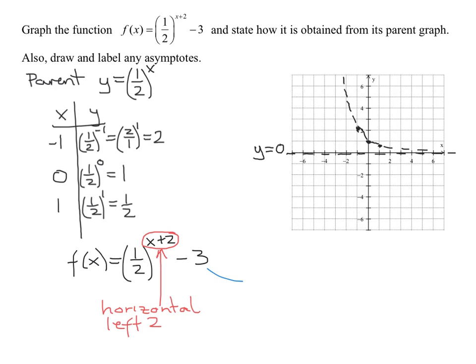And then we've got the minus 3. This is outside the function, after the function. So this is going to be a vertical effect, and it is going to shift down 3 units. And if you remember your order of operations, we always do horizontal shifts first and we do vertical shifts last.